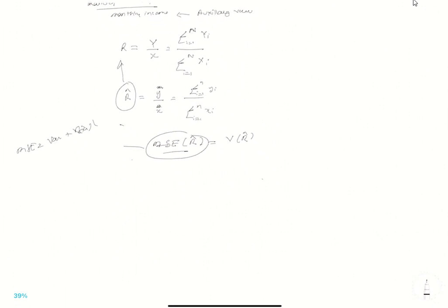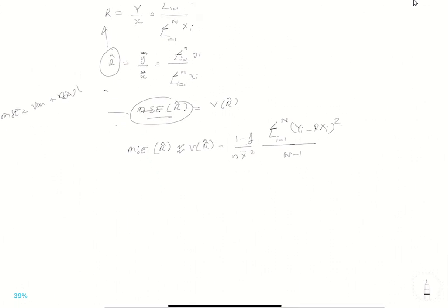So mean square error of r hat is similar to the variance of r hat which is given by formula 1 upon 1 minus f n x bar square. i equals 1 all the way to n yi minus r xi square divided by n minus 1, where f is going to be n upon capital N. And r is equal to y hat upon x hat.